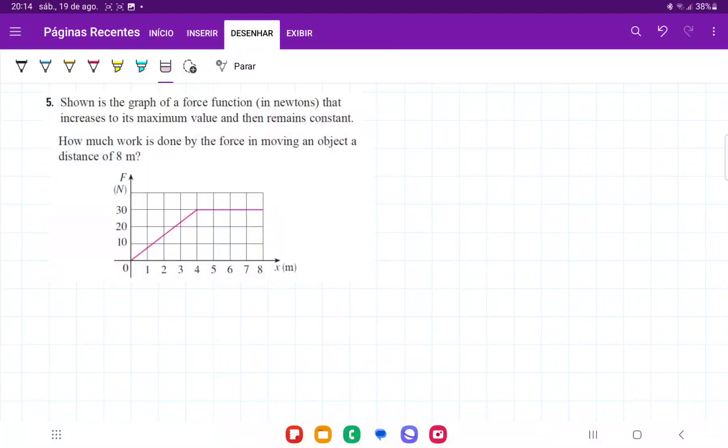So for number 5, we're shown the graph of a force that increases and then remains constant. And then it's asking us how much work is done by that force in moving an object at a distance of 8 meters.